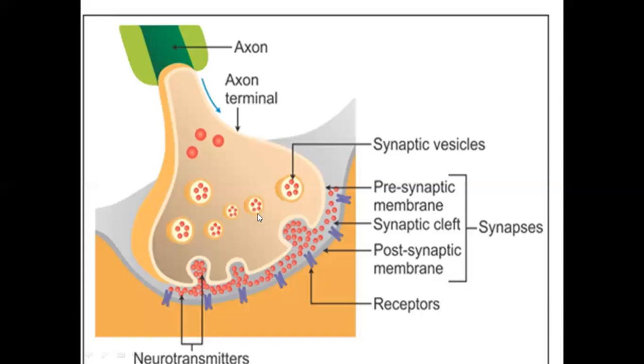These are synaptic vesicles. This is the post-synaptic membrane. This is the pre-synaptic membrane. The space between is the synaptic cleft, filled with extracellular fluid. These are synaptic receptors where neurotransmitters attach. This is the synapse.